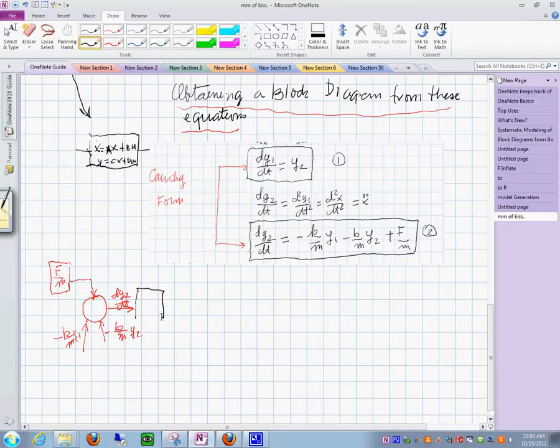If we integrate this, like 1 over s, what do we obtain over here? This is y sub 2. And then let's just maybe make it go to a scope in here so that we don't have hanging signals.